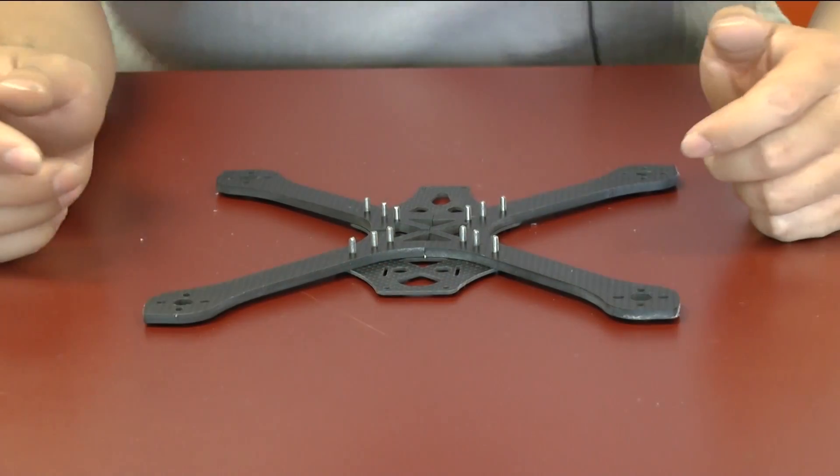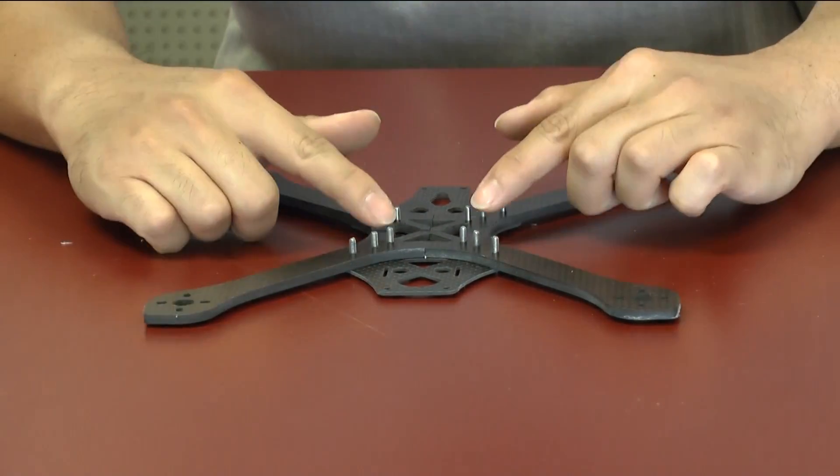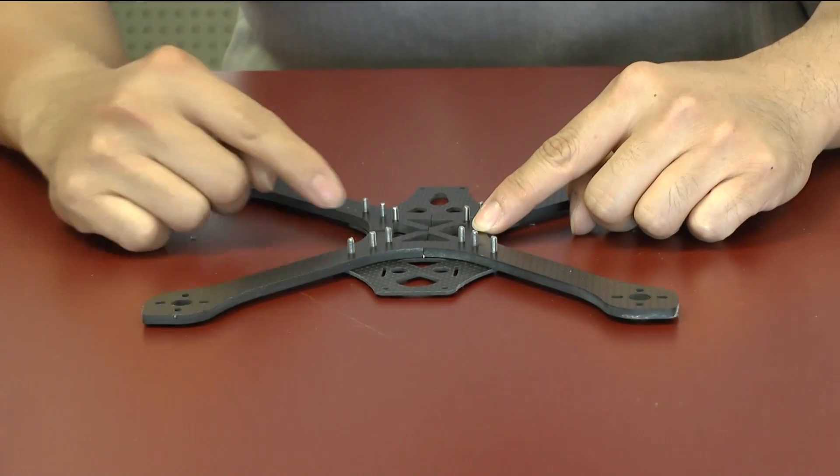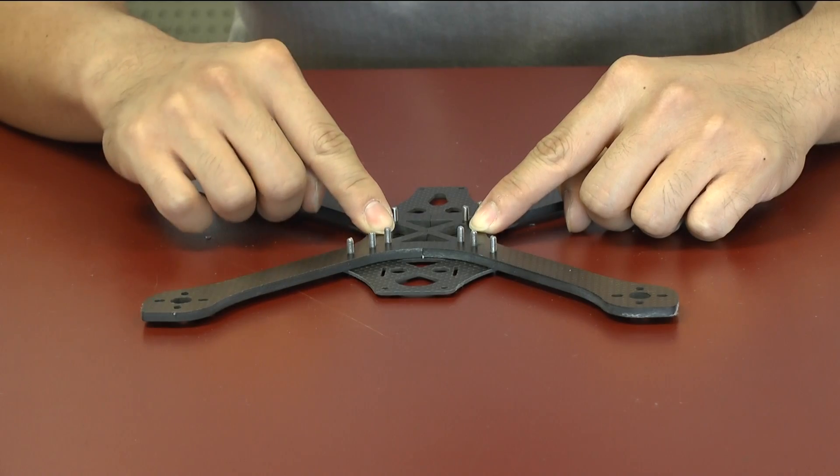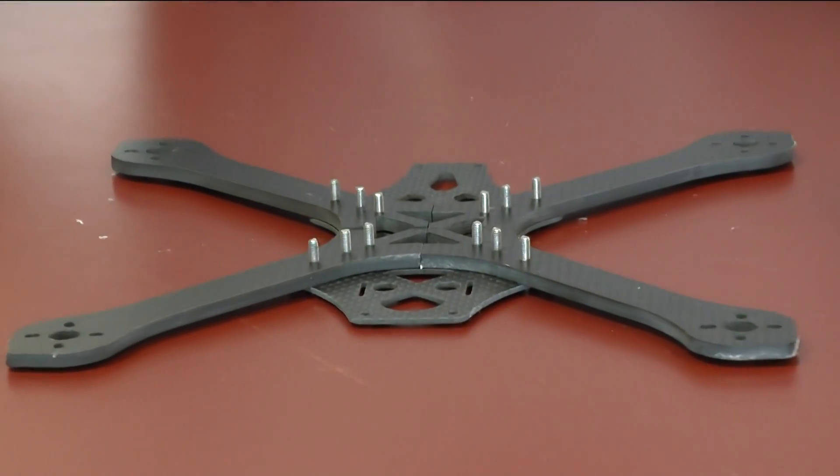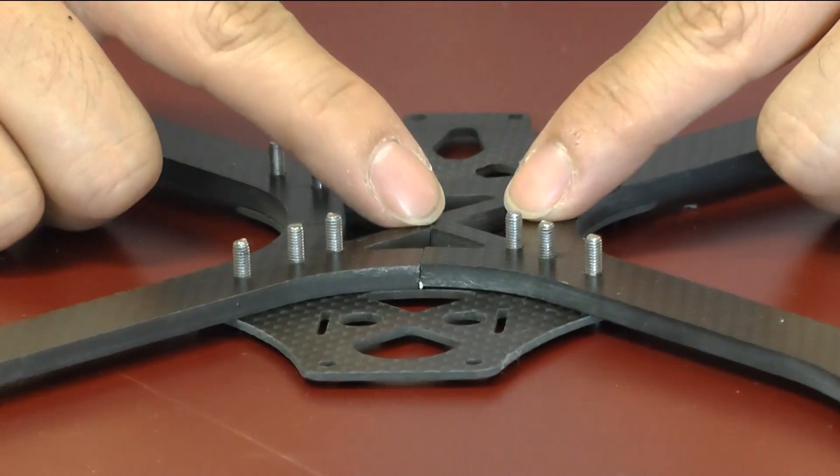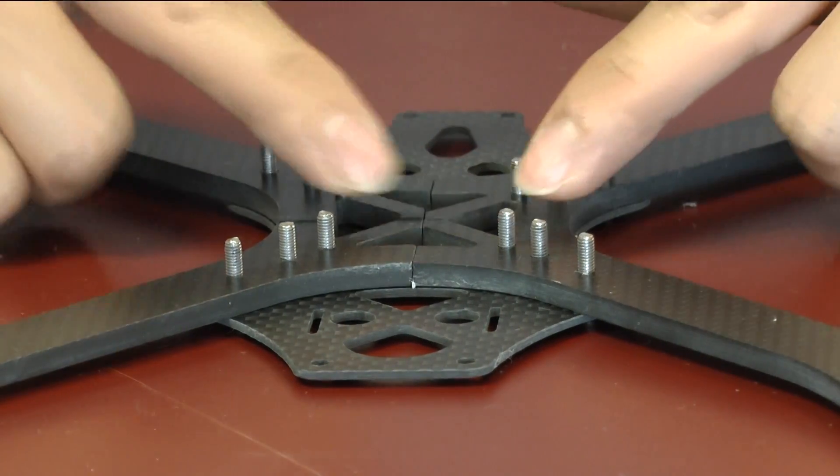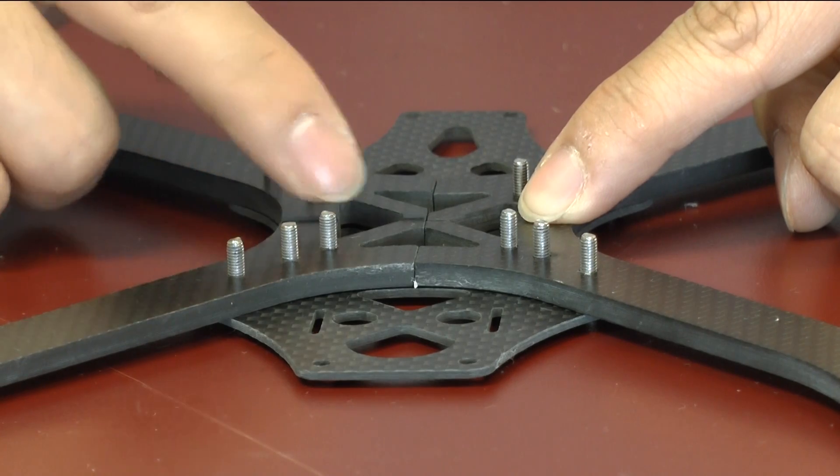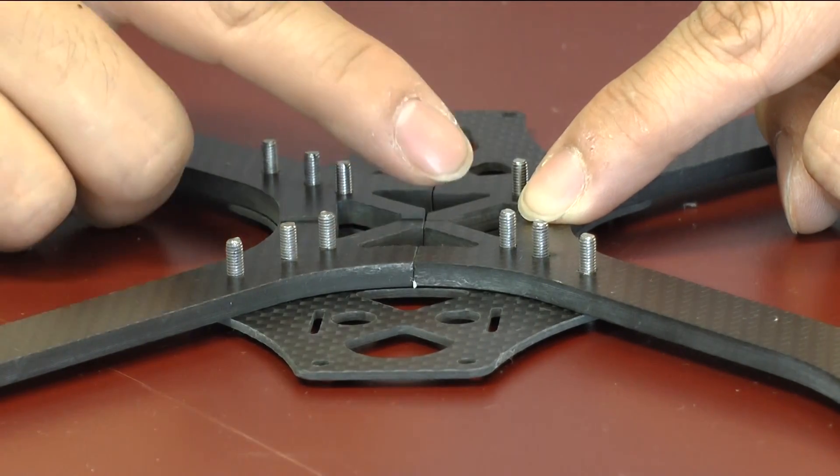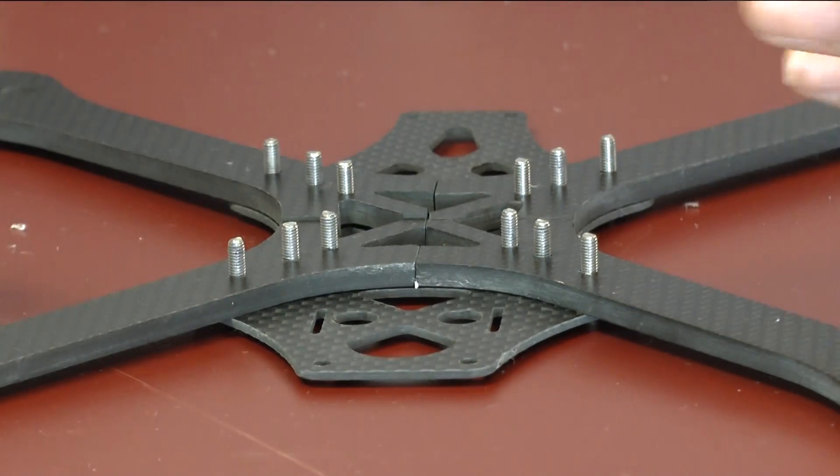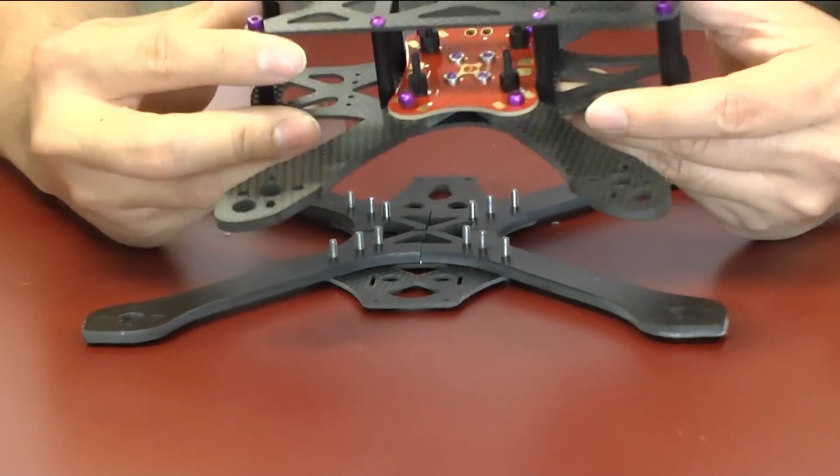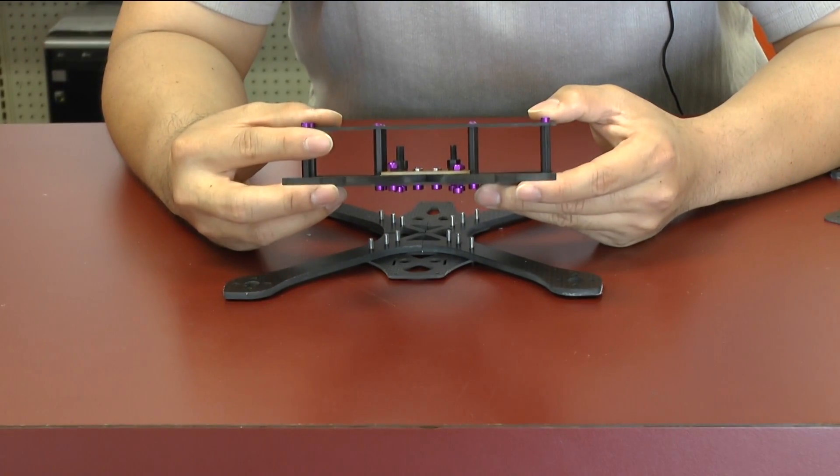So the first part of the build, we went ahead and we put on the arms and then we put on the six screws from the bottom going to the top. As you can see, this is one of the X pattern frames in which all the arms meet in the middle and then they get reinforcements from each other through meeting in the middle. This one's a little bit more elaborate because they actually did some cutouts in the center to lighten up the frame itself.